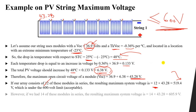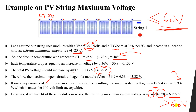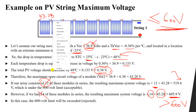However, if we assume 14 modules in series, the system voltage would be 14 × 43.28V = 605.29V, which is greater than the maximum system voltage of 600V. Therefore, 14 modules in series is rejected because the 600V limit is exceeded. The maximum number of modules in series is 12.